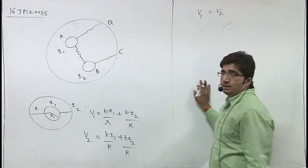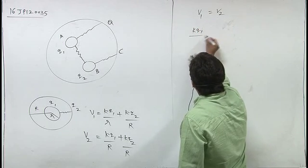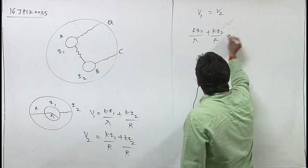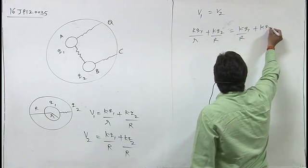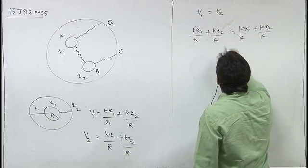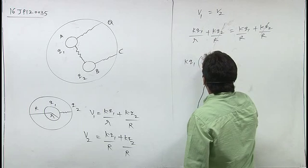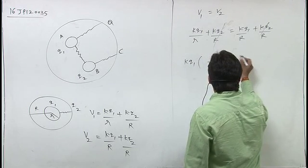Since the potentials are the same, we can write: k·q1/r + k·q2/R equals k·q1/R + k·q2/R. After canceling terms and taking k·q1 common, we get: k·q1(1/r - 1/R) equals zero.